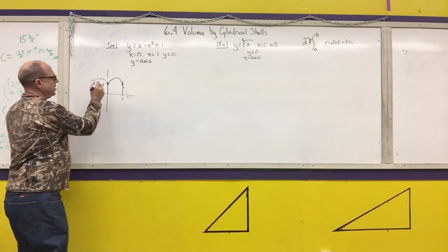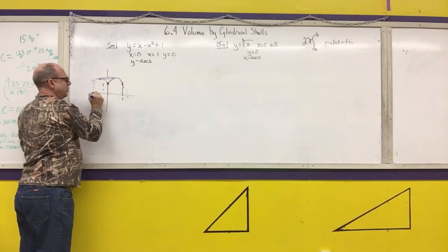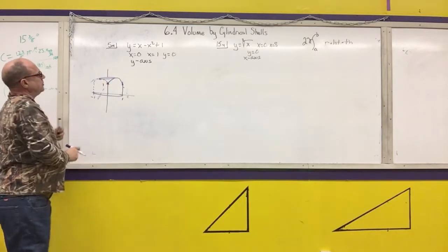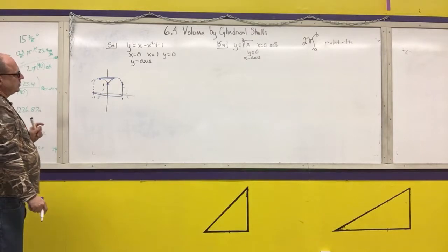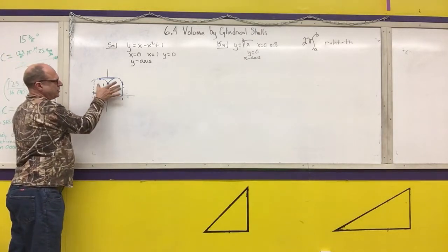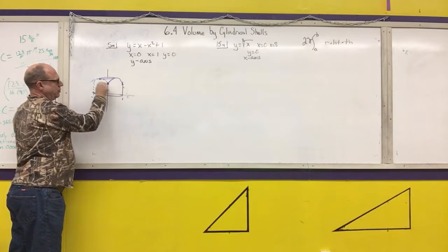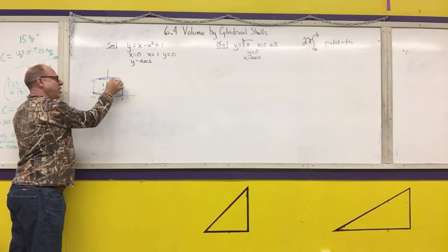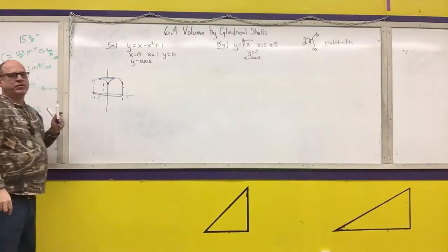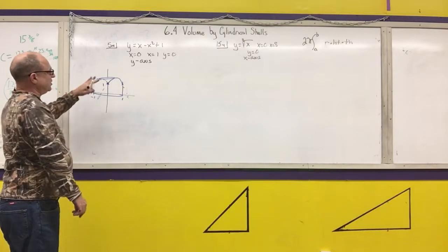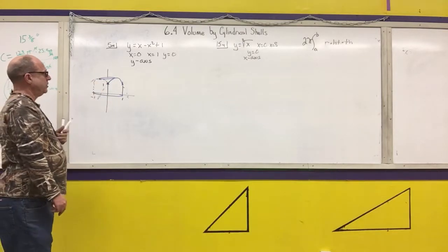It says to revolve it around the y-axis. This is the region that I have revolved around the y-axis. You can see I could use the disk method up to here, but once I get here, the same equation is the upper curve and the lower curve, so I could not use the washer method. So this is one that I have to use shells on.